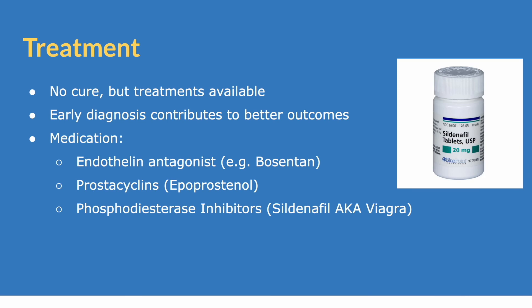In regards to treatment, there's actually no cure for pulmonary hypertension, but there are treatments available. It's important to recognize that early diagnosis will contribute to better outcomes in patients. Some of the major medications include endothelin antagonists — because we had increased endothelin as one of the major causes, applying an antagonist will help decrease its levels.